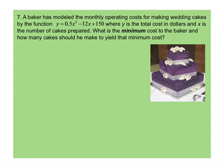Here's our last problem here. A baker has modeled the monthly operating cost of making wedding cakes by the function y equals 0.5x squared minus 12x plus 150. Y is the total cost in dollars and x is the number of cakes prepared. I need to find out what is the minimum cost to the baker and how many cakes should he make to yield that minimum cost. So, remember, when I see the word minimum, that is just asking me to find the vertex.